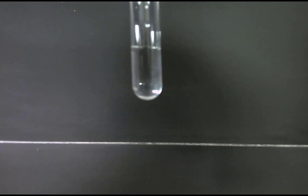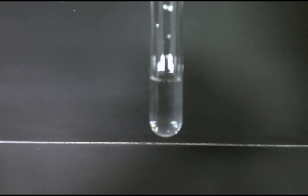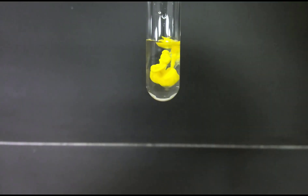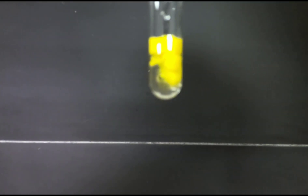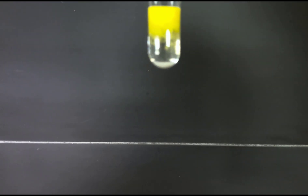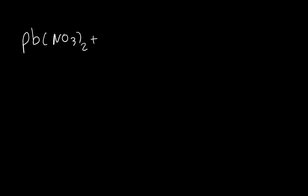For the second example, we have lead nitrate in the test tube and I'm adding potassium iodide to this solution, and you can see a yellow solid forms during this reaction. Let's write the equation. We have lead nitrate and we add potassium iodide. We would like to write the products, find out which one is the yellow solid, and then write the ionic equation and net ionic equation.